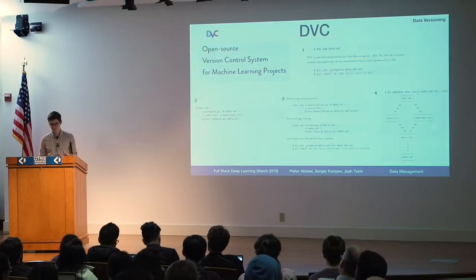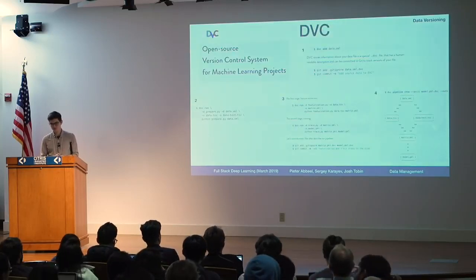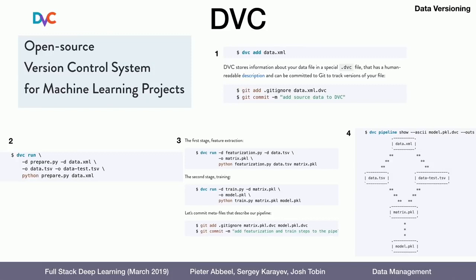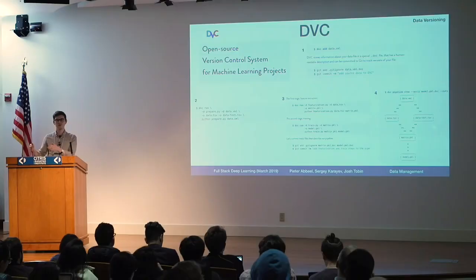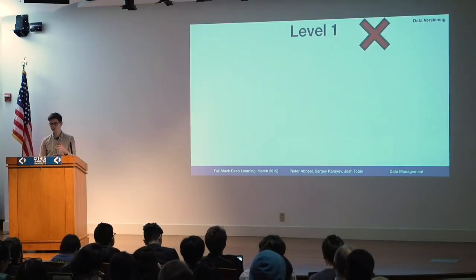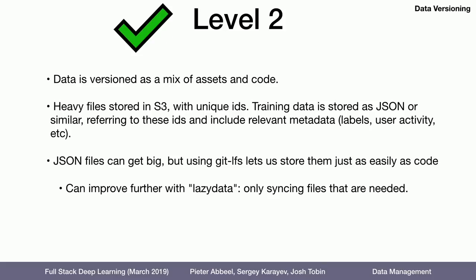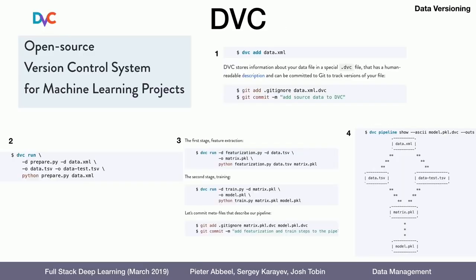It hasn't made sense for me so far, but here's an example of DVC. It's an open source version control system for machine learning projects — the one I find most exciting out of those I listed. Essentially, instead of saying 'git add data.xml', you say 'DVC add data.xml'. That uploads the file to S3 and creates another file called data.xml.dvc which has the link to S3. It's kind of what I was telling you to do at level two, but it does it automatically for you, which could be nice.